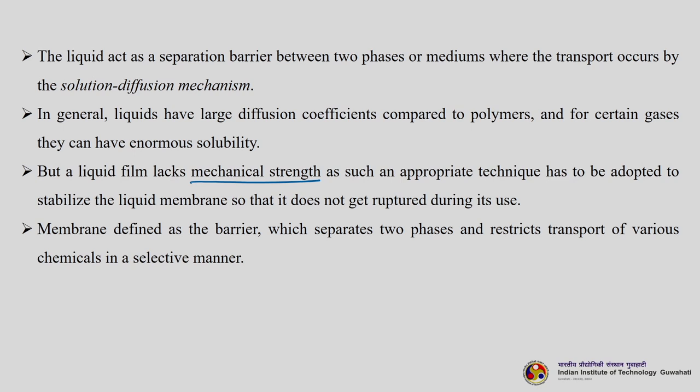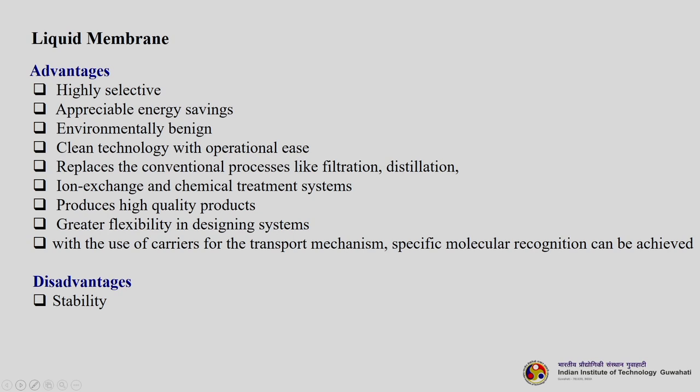A membrane is defined as a barrier which separates two phases and restricts the transport of various chemicals in a selective manner. Advantages: liquid membranes are highly selective — I can target and make a liquid membrane which will remove and separate the solute we want from the feed phase. We can also have different modes of transport, not only solution diffusion — we can have carrier mediated transport, where a particular carrier will help remove the component more efficiently.